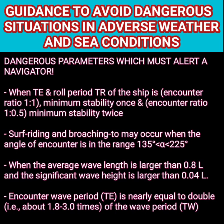Now let me tell you about the dangerous parameters you must know — both for exams and practically. When the sea is coming from astern — a following sea or quartering sea — there are specific dangers. If the period of encounter and the roll period of your ship are in the ratio of 1:1 or 1:0.5, it is a risky situation, because your ship will reach minimum stability once or twice during the wave cycle. During quartering seas there is also a risk of surf riding and broaching to, which occurs when the angle of encounter is in the range of 135 to 225 degrees.